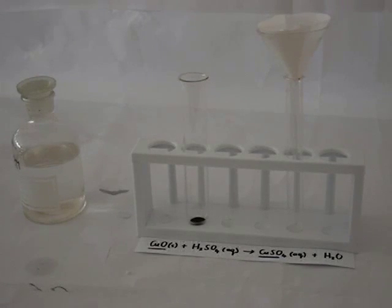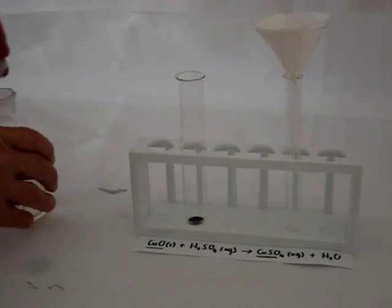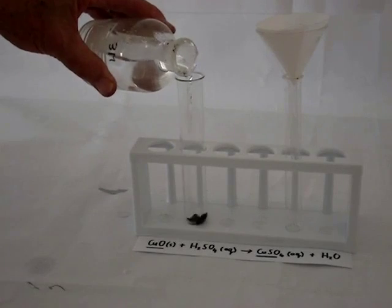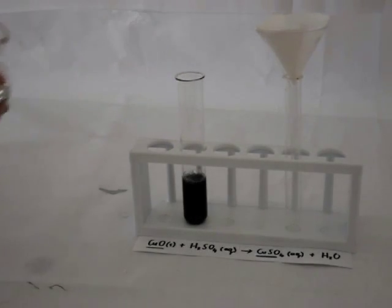Here we have copper oxide, which is a black powder, and we're going to add sulfuric acid. The two react together to form copper sulfate and water.